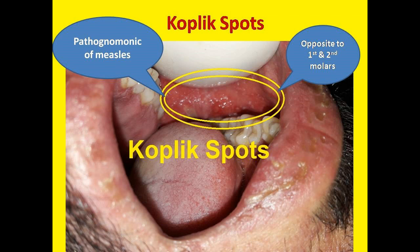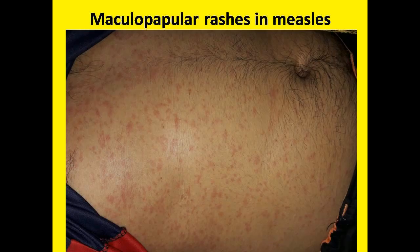Measles is a highly contagious infectious disease which usually presents with high-grade fever, cough, runny nose, inflamed eyes, and characteristic maculopapular rashes. Maculopapular is a compound term of macules and papules — macules are small flat discolored spots on the skin surface, while papules are small raised bumps.